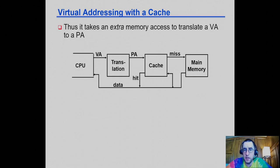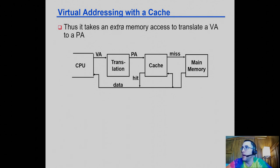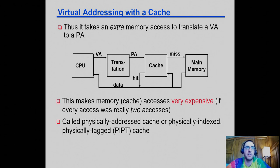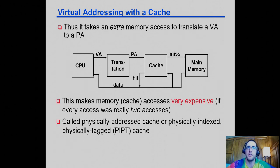Now let's talk about the impact of address translation on memory access. The translation requires going to memory to read the page table entry. If we had to translate a virtual address to a physical address before every cache access, we'd need a memory access every time, making memory accesses extremely expensive. This organization — translating before the cache — is called a physically indexed, physically tagged cache, meaning we index and check tags using the physical address.